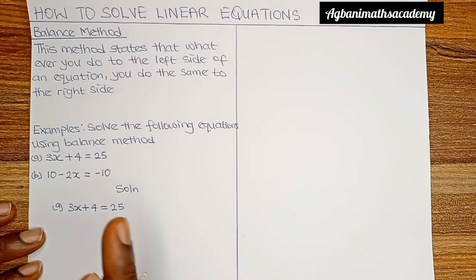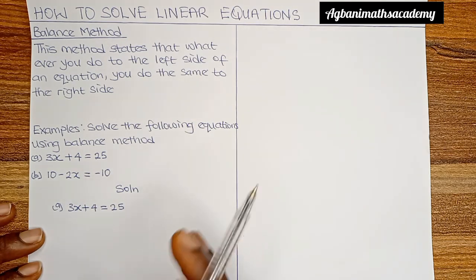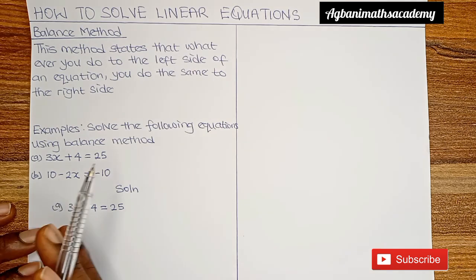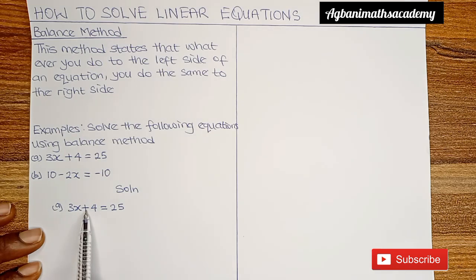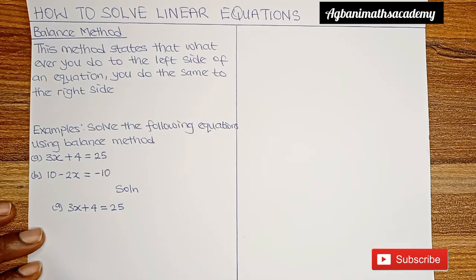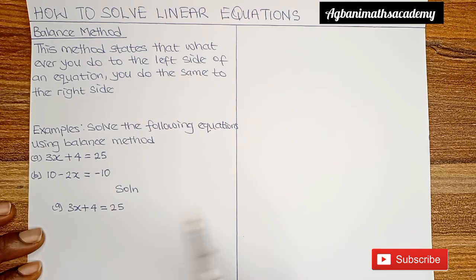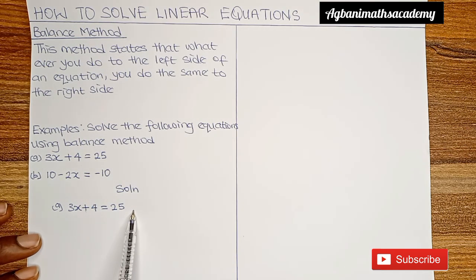To get the value of x, there are two numbers we have to move to the right side — they are unwanted on the left side. The first number is plus 4. Always remember to join the number to the sign in front of it. The second number to eliminate is plus 3. So we have plus 3 and plus 4. Using the balance method, the first number we move to the right is plus 4. To cancel out plus 4 on the left side, we introduce the opposite of plus 4, which is minus 4. Using balance method, we introduce minus 4 to both sides.